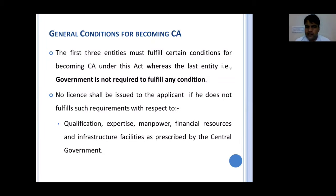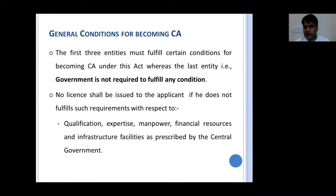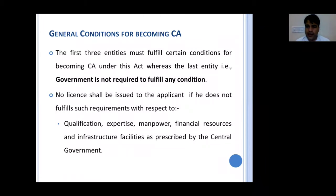For the first three categories — individuals, companies, and partnership firms — there are certain conditions that must be fulfilled for a certifying authority license to be granted. However, when we talk about the government or its agencies becoming a certifying authority, there is no such condition which is necessary to be fulfilled. Government or its agencies have no conditions for certifying authorities — if the government decides, they can act as certifying authority.